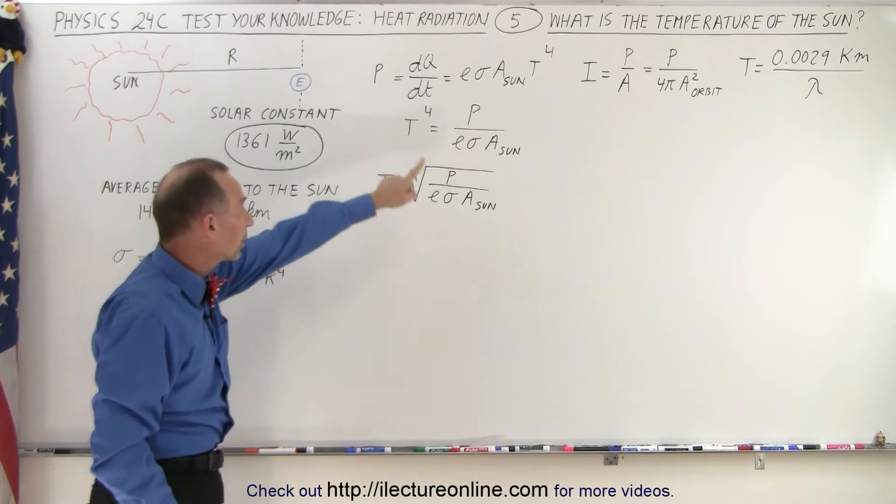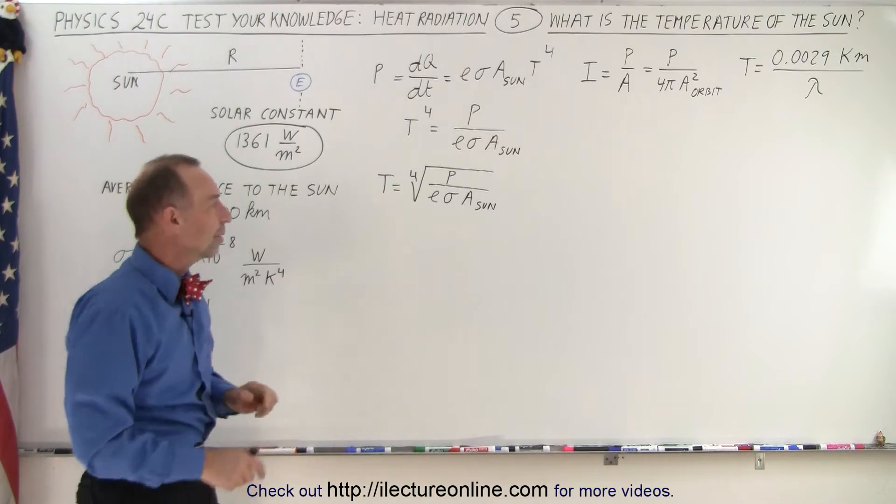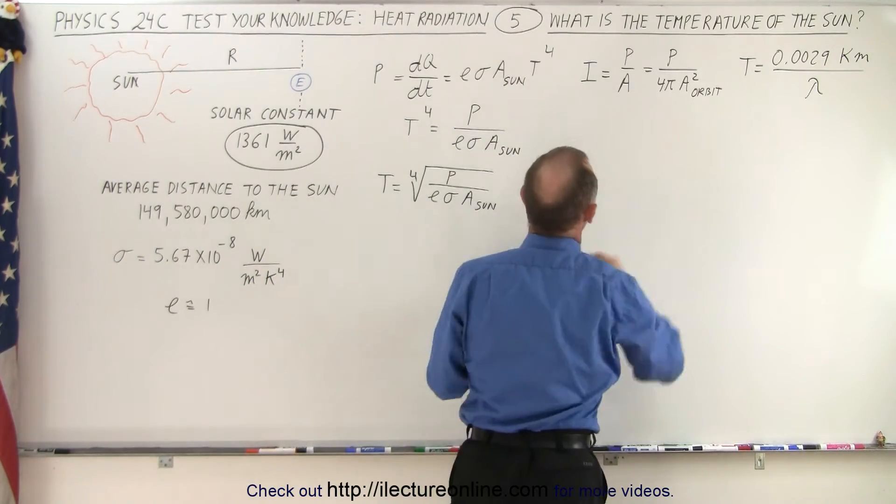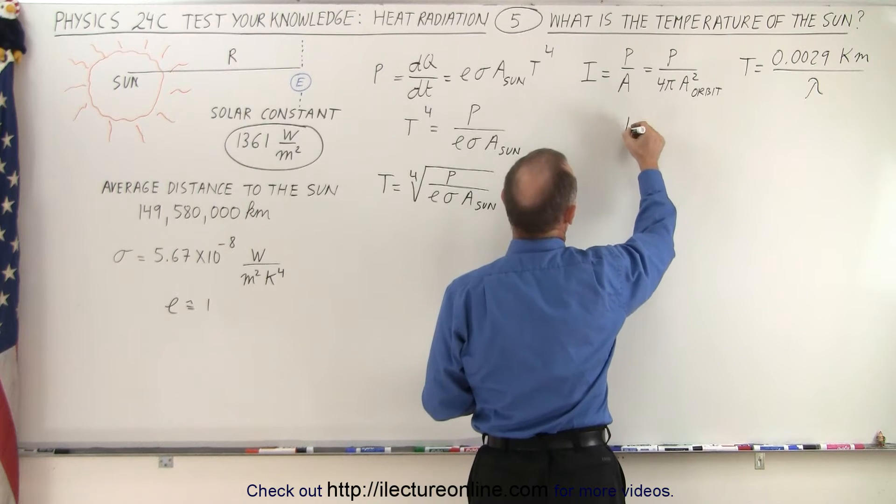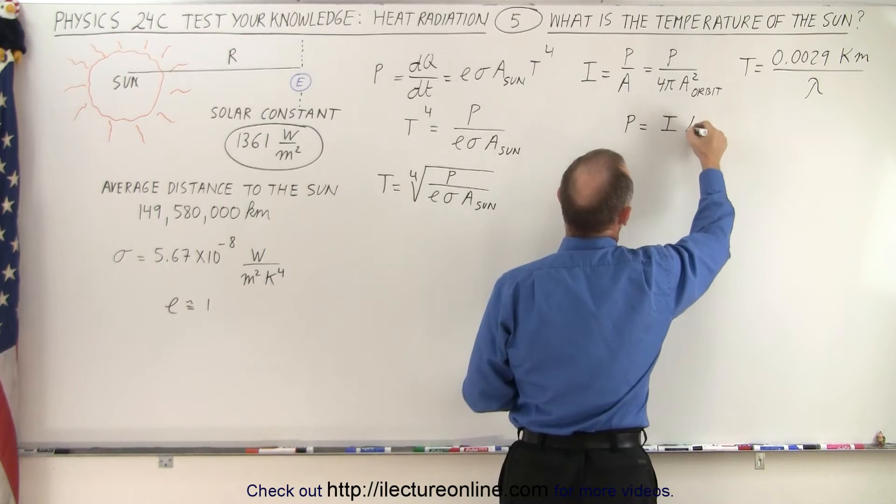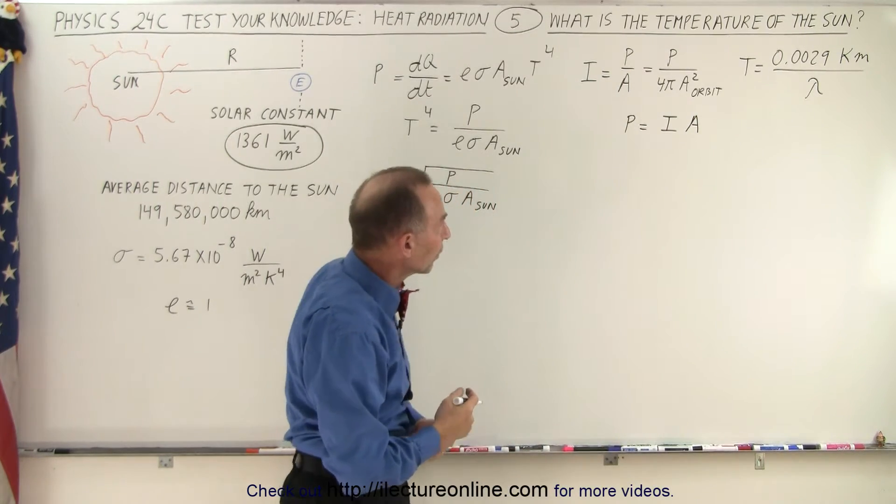We understand the constant of Stefan-Boltzmann's law, and we'll figure out the area of the sun in a little while. First, we need to find the power output of the sun, so we can say that the power is equal to the intensity of the radiation that reaches us times the surface area of the sphere made by the radius of the earth.